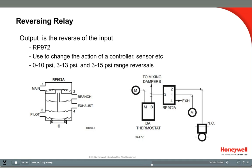In this example, a VAV box has a normally closed damper and a normally closed reheat valve. As the room temperature decreases, the direct-acting thermostat closes the damper to a minimum position. On a further drop in room temperature, the reheat valve should open. But it's a normally closed valve, so a decreasing pressure would close it — that's not what we want. So a reversing relay is used to reverse the branch line pressure to open the reheat valve on a drop in pressure.